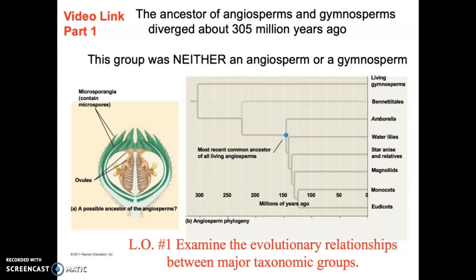So, angiosperms. The ancestor of angiosperms and gymnosperms diverged about 305 million years ago. That ancestral species group split and gave rise to these different lines — it was not an angiosperm, not a gymnosperm, but something different. The most recent common ancestor to all living angiosperms goes back roughly 145 million years ago, based on current evidence.